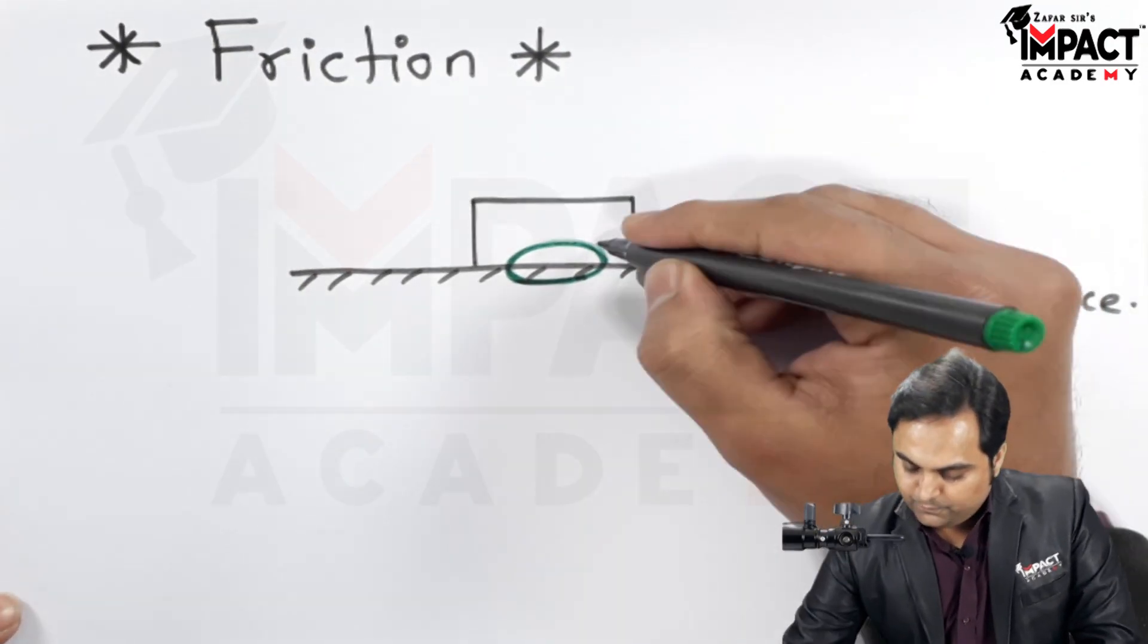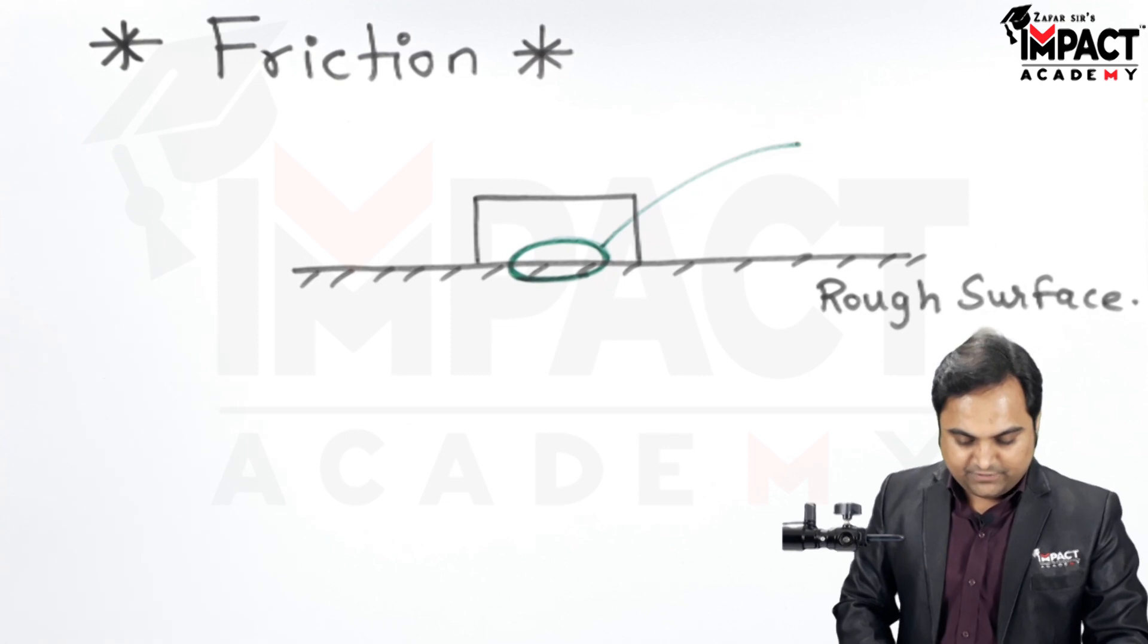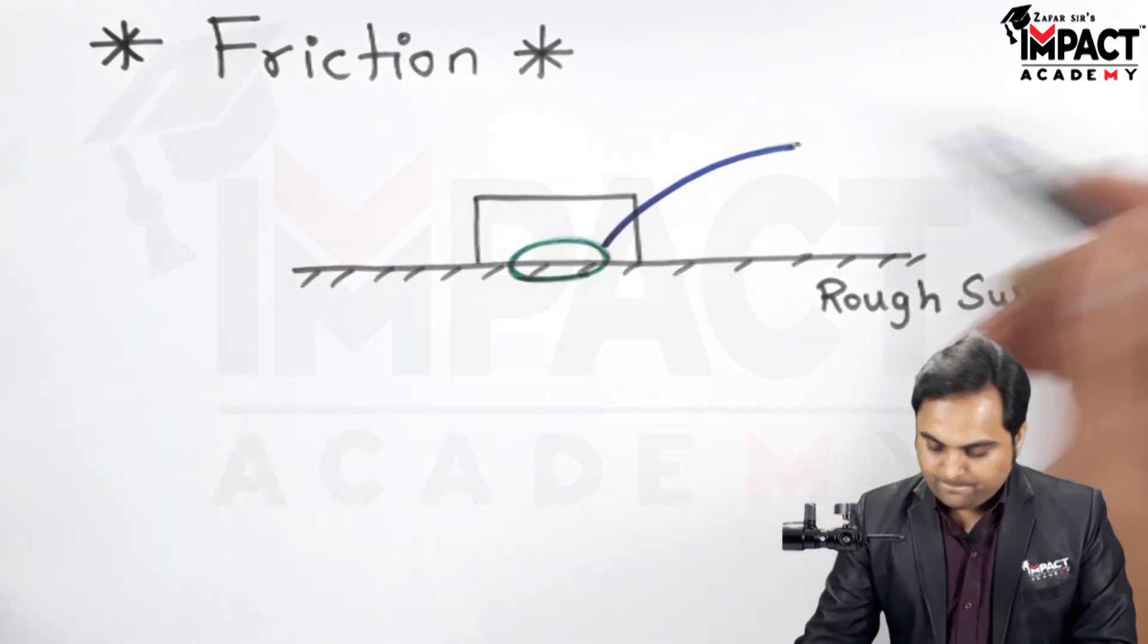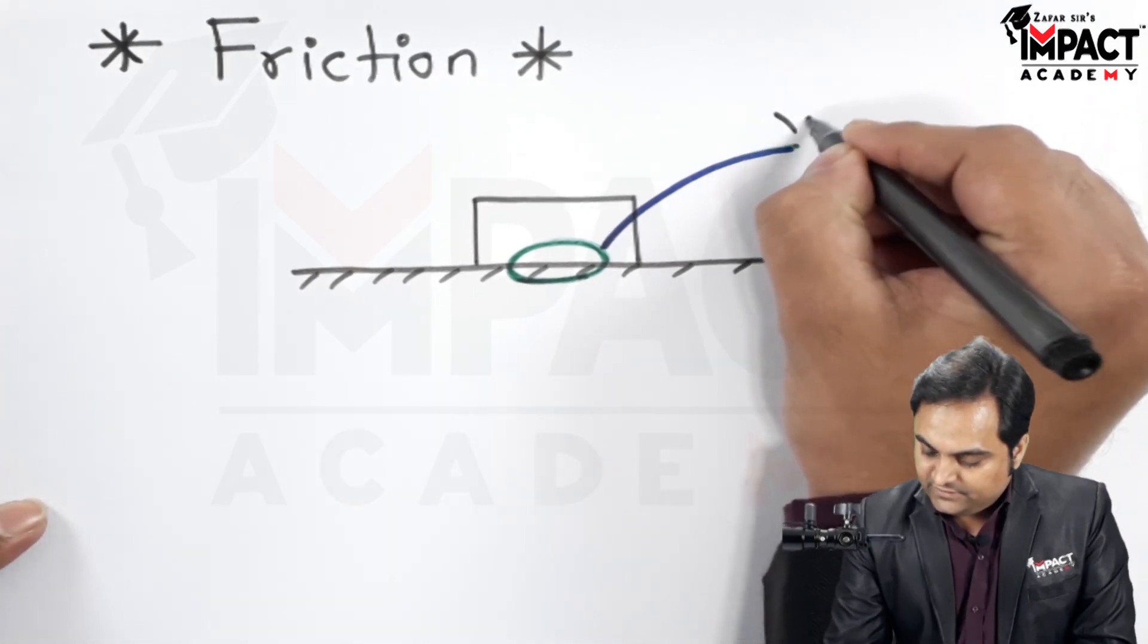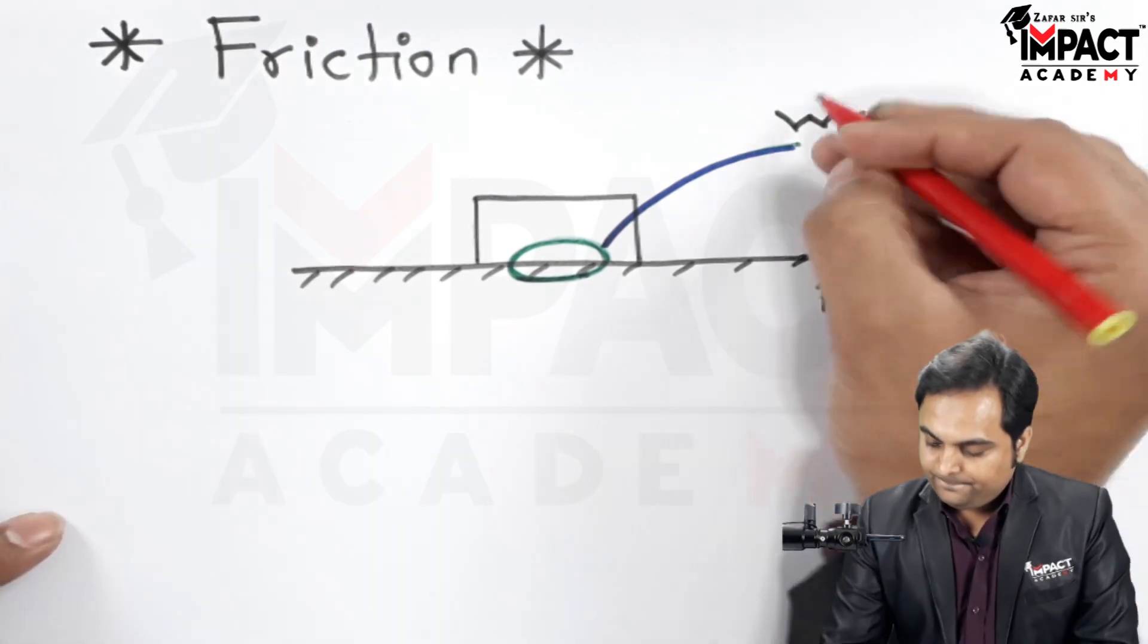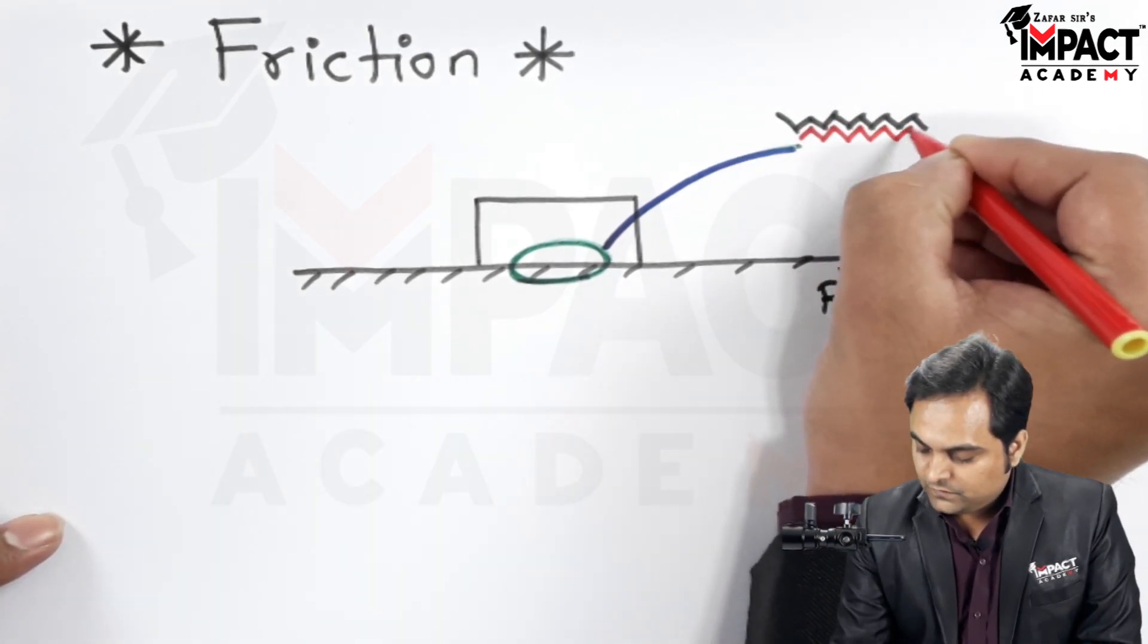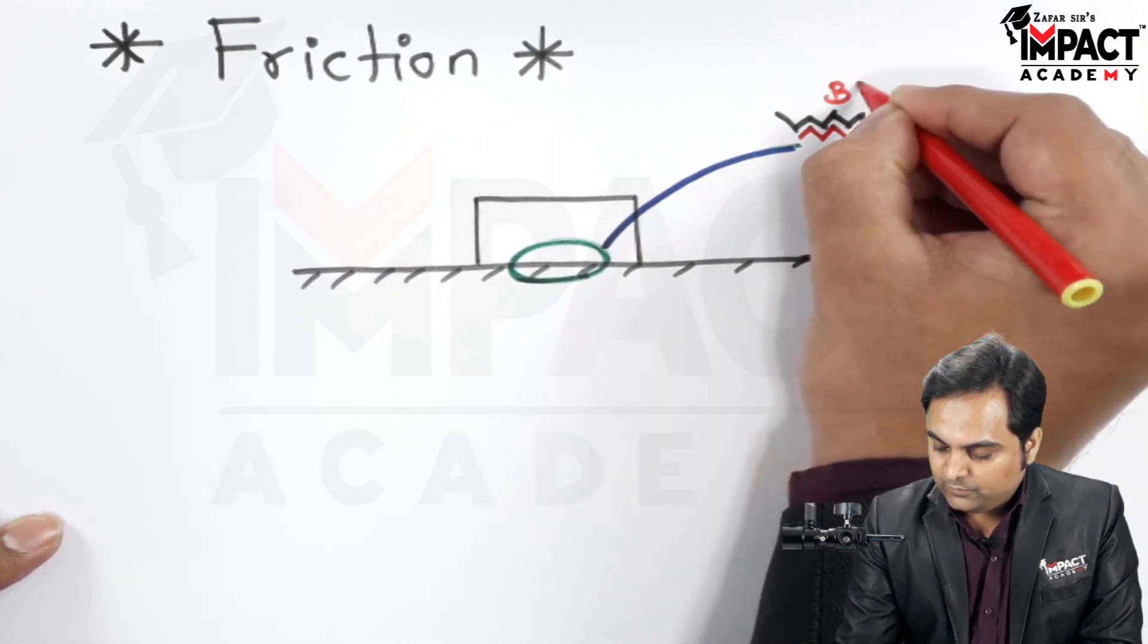When we see it at the microscopic level, then what is the observation here? We would be seeing that there is an interlocking pattern between the surface. This is the surface and here is the block.